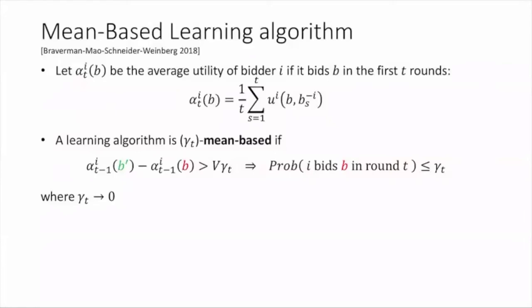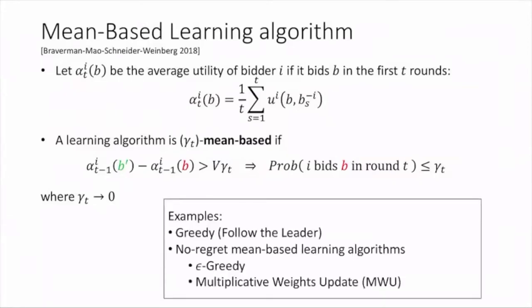This intuitively says that in each round, the algorithm chooses a bid with low probability if the average utility of the bid in the history is much worse than the average utility of the optimal bid. The algorithm satisfying mean-based property is a wide class of online learning algorithms that include greedy algorithms and many well-known no-regret learning algorithms, such as epsilon-greedy and multiplicative rates updates.